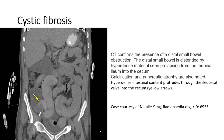This abdominal CT confirms the presence of distal small bowel obstruction. The distal small bowel is distended by hyperdense material seen prolapsing from the terminal ileum into the cecum. We also see calcification and pancreatic atrophy. Hyperdense intestinal content is noted prolapsing through the ileocecal valve into the cecum.